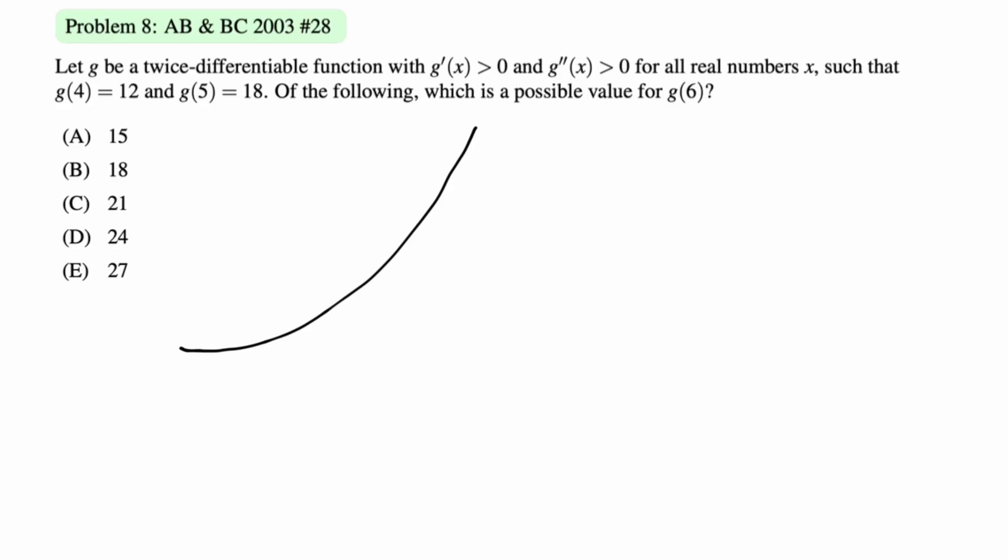g of 4 is equal to 12. g of 5 is equal to 18. Okay. So if I move over 1, I go up 6. And then we want to know possible values for g of 6, which conveniently is only one away. So if we go over 1, we go up 6. So if I go over 1 again, because this is concave up, I have to go up more than 6. So this delta y has to be greater than 6. So if you think about the ordered pairs, this one is 5, 18. This other ordered pair is just going to be, I'm going to call it 6, g of 6. You probably know the answer at this point. But g of 6 has to be greater than 18 plus 6.